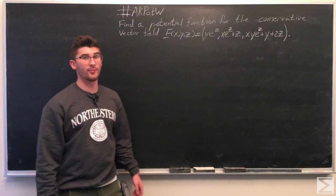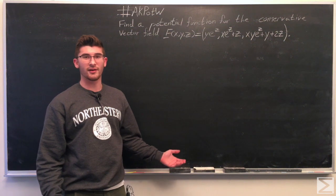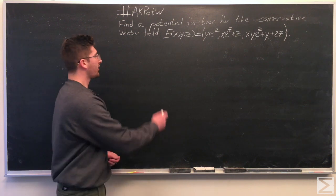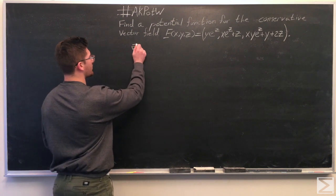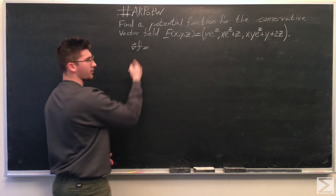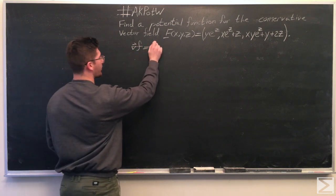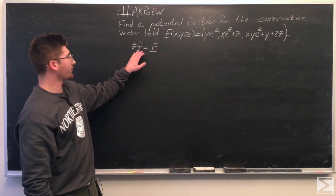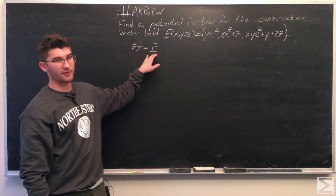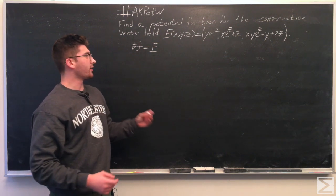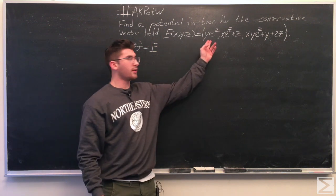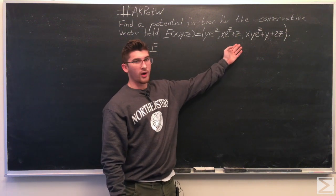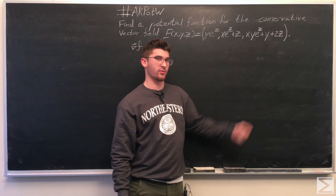The first thing you should note is that a potential function for a conservative vector field is the function such that the gradient vector of the potential function f is equal to the vector field big F. So the x-component is the partial derivative with respect to x of the potential function, the y-component with respect to y, and the z-component with respect to z.